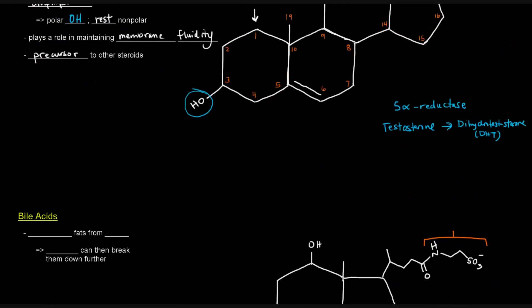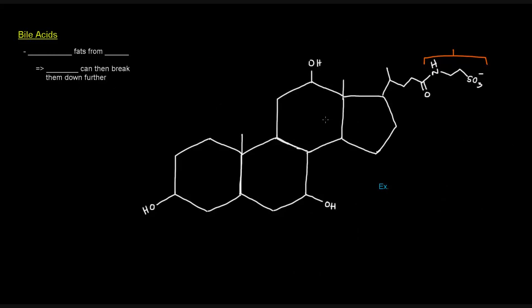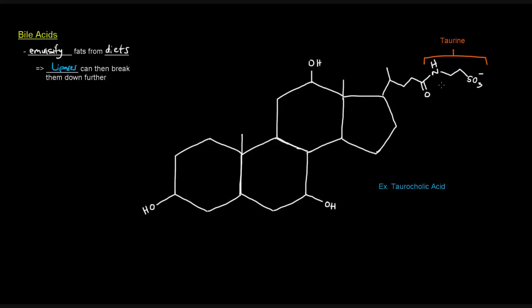Next up: bile acids. There are bile acids that are steroids, and their function really is to emulsify fats from our diet. That basically means it takes these large fats that we're consuming and breaks them up into smaller molecules that lipases can act on. Lipases will then break down the fats further. I've drawn here an example of a specific bile acid called taurocholic acid. The 'tauro' portion of that name comes from taurine, and that taurine portion actually carries the acidic group bearing the negative charge after it has been deprotonated.